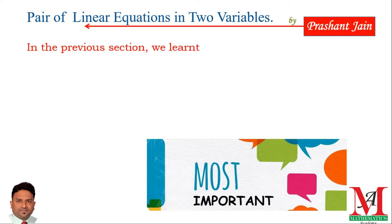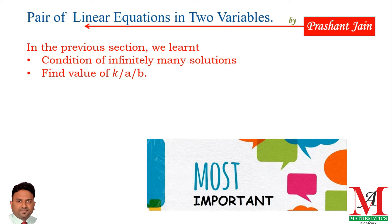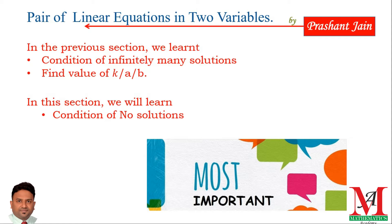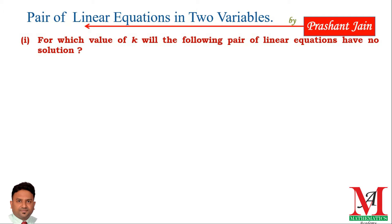In the previous section, we learned the condition of infinitely many solutions and by using that condition, we found the value of k, a, or b. In this section, we will learn the condition of no solution and by using the condition, we are going to find the value of k, a, or b. So, in the very first question — the question is on your screen — we need to find the value of k for no solution. The equations are on your screen. Now let's start the solution.